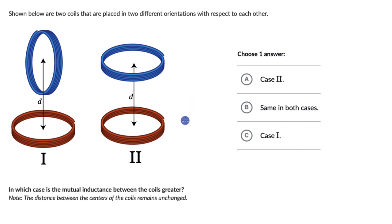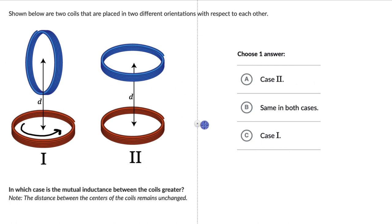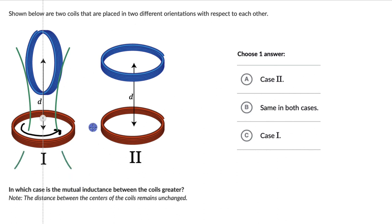Now let's try to recall what mutual inductance is to begin with. For mutual inductance, let's say if we have a current running in this coil like this. Because of the current in this coil, there will be magnetic field lines produced. If we try to draw them, they go in and come out from here, and there will be more magnetic field lines which look like this.